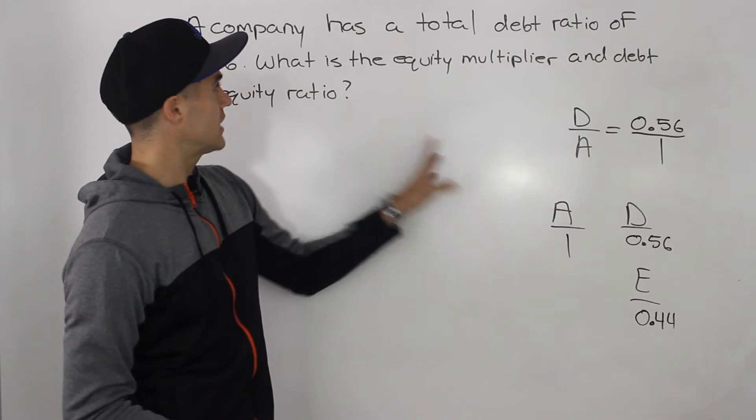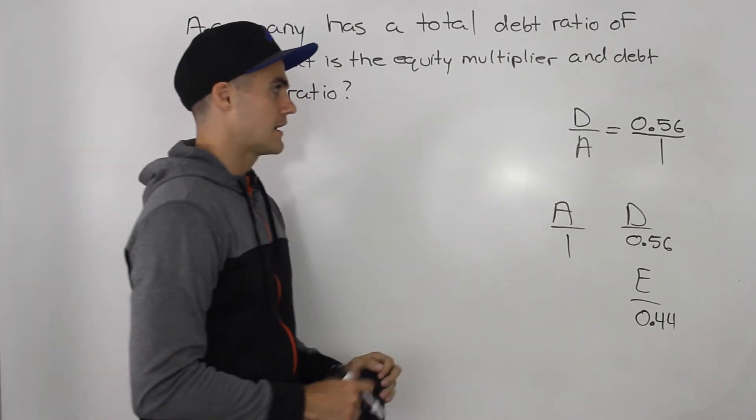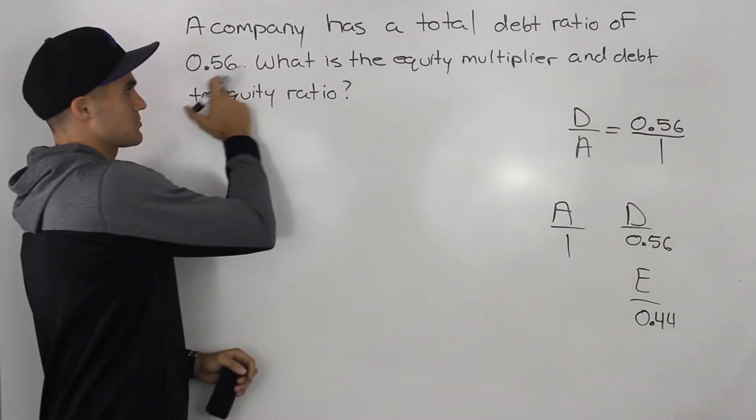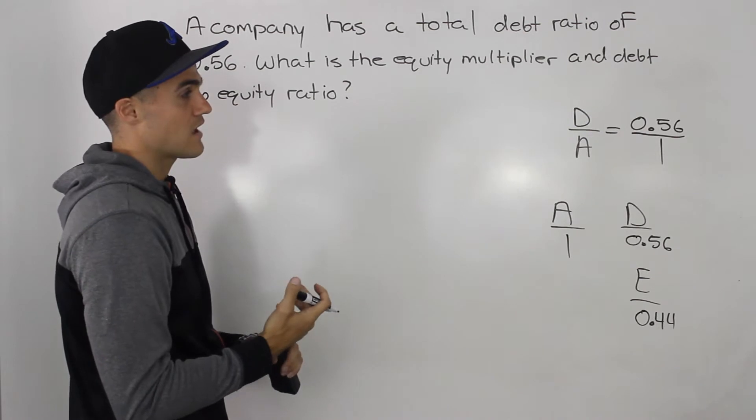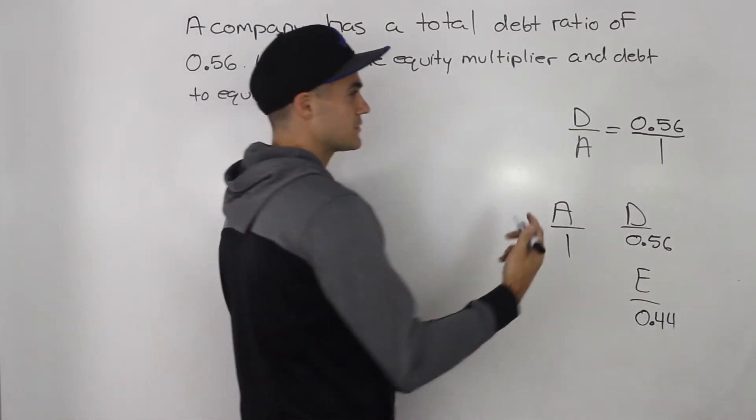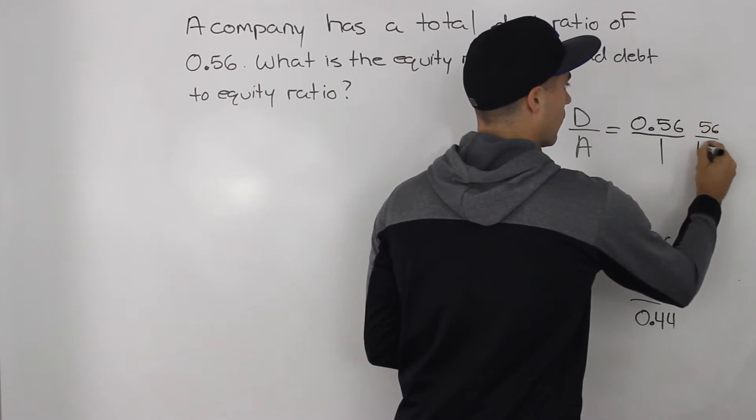Okay, so we took that 0.56, put it over 1, and then made a mini balance sheet. Now, another thing you can do is you could take this decimal 0.56 and then convert it into a fraction. The simplest fraction I can think of would be 56 over 100.